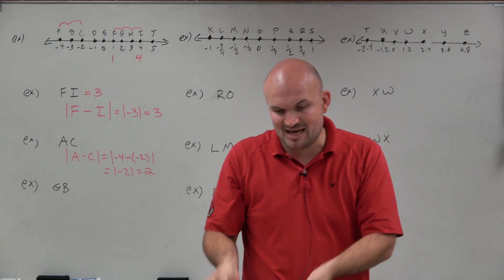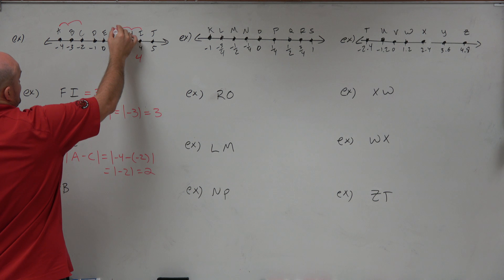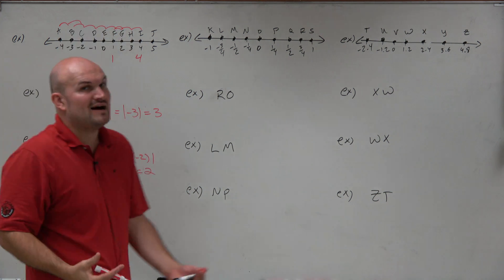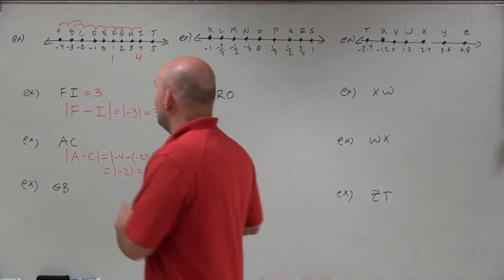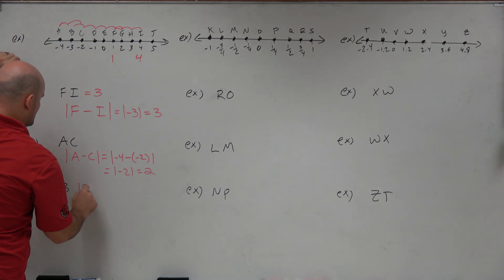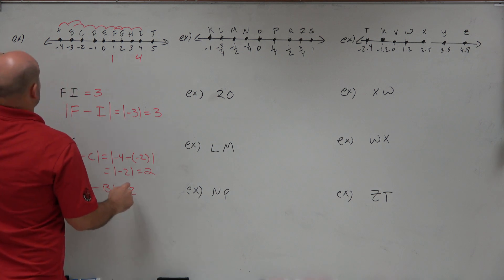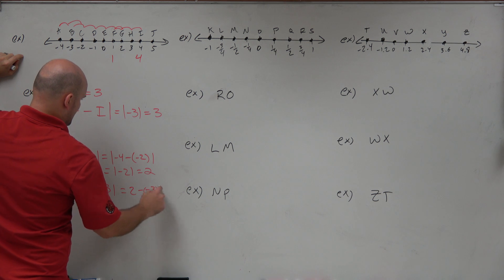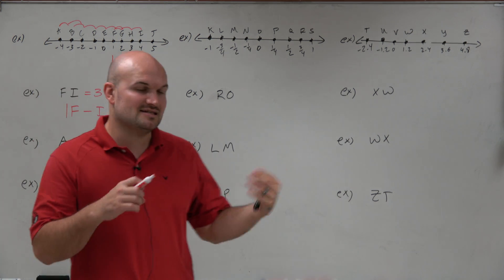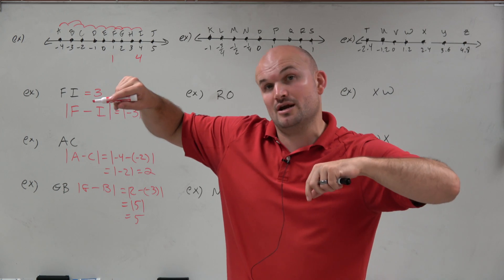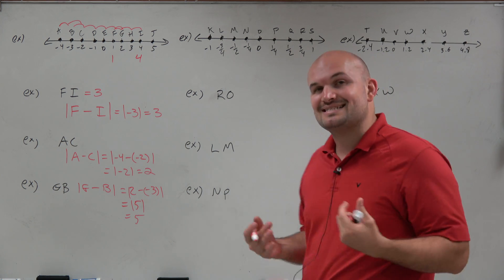So far we've gone from left to right. What happens when we go from right to left? Going from g to b, that's 1, 2, 3, 4, 5 — so the answer is 5. I don't care that I went to the left; the distance traveled is still 5. Let's go through the formula: |g minus b|. So g is 2, minus b, equals |5|, which equals 5. In either case, it doesn't matter if you're counting along a number line or just subtracting the two values — as long as you take the absolute value, that gives you the distance.